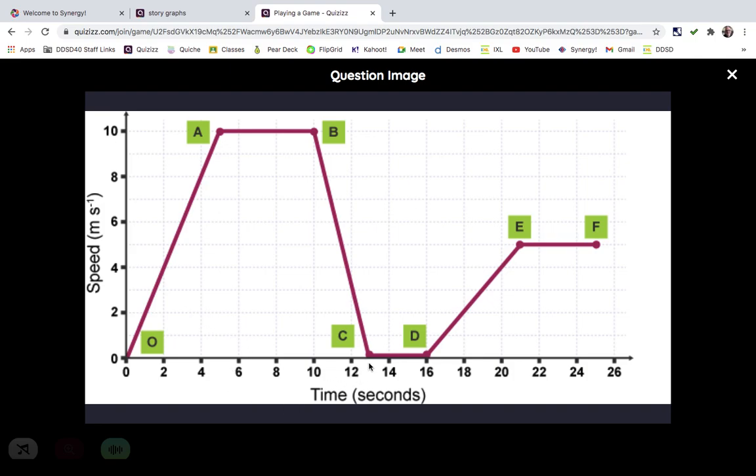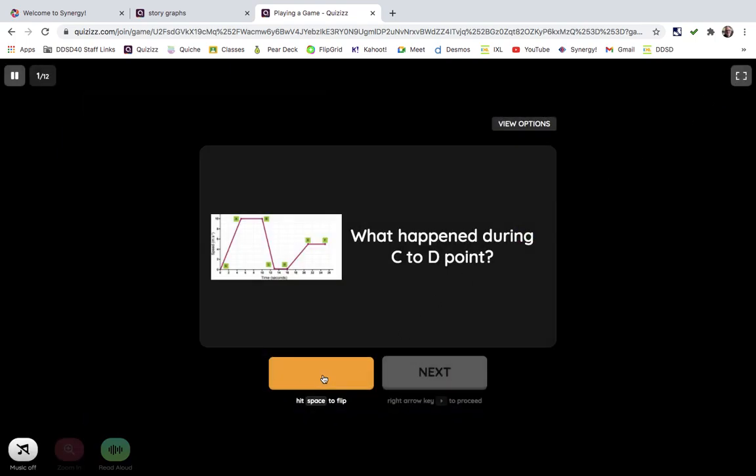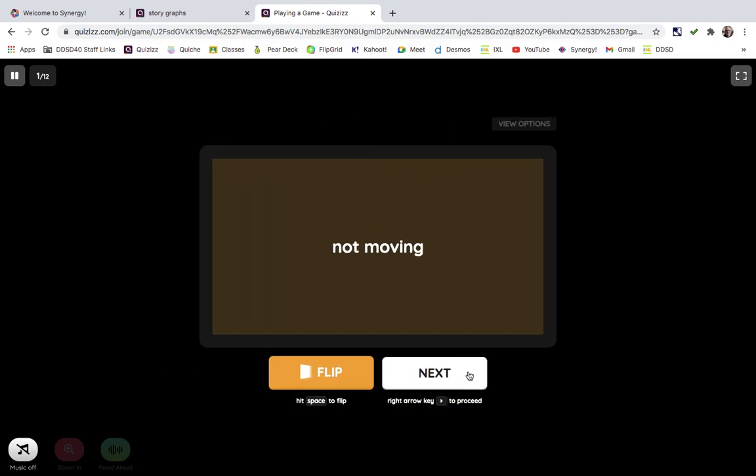And on the bottom, we see seconds. So from C, which is 13 seconds, to D, which is 16 seconds, the speed was zero. So whatever this object was, it wasn't moving. So the answer on this one was that it was not moving.